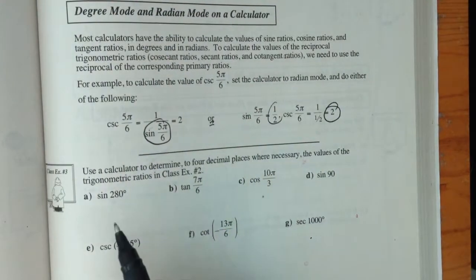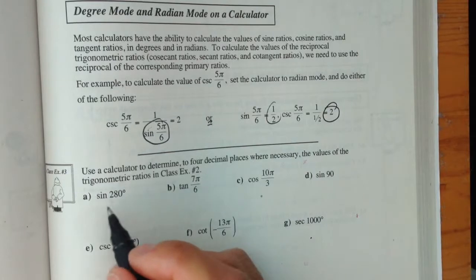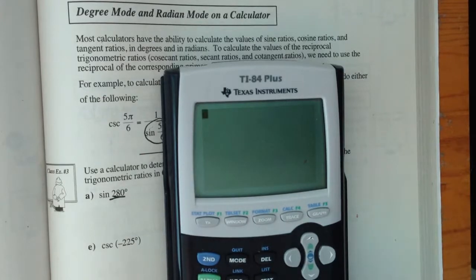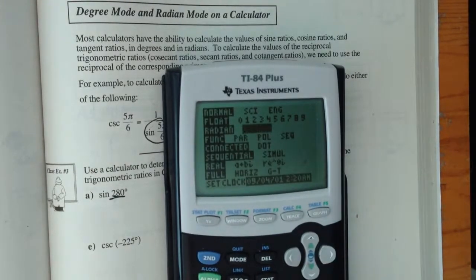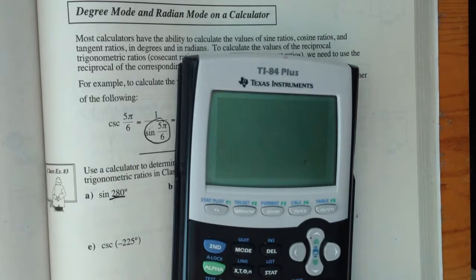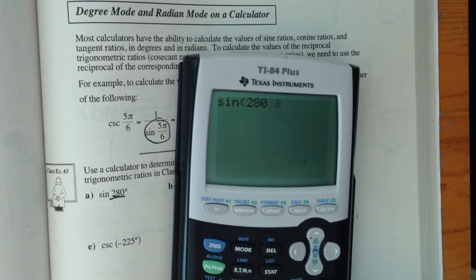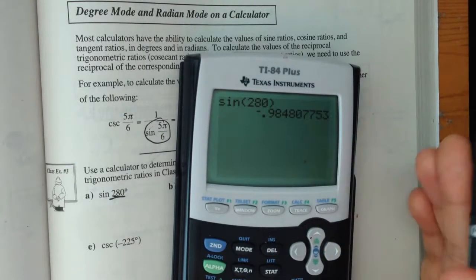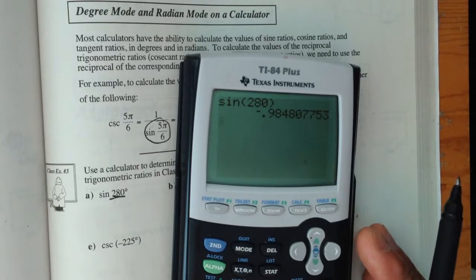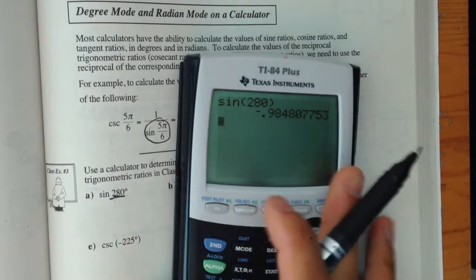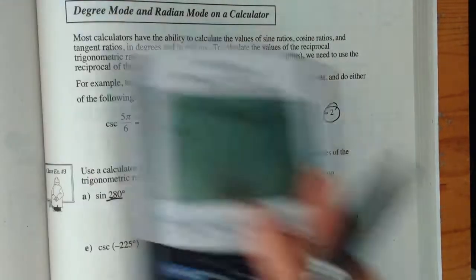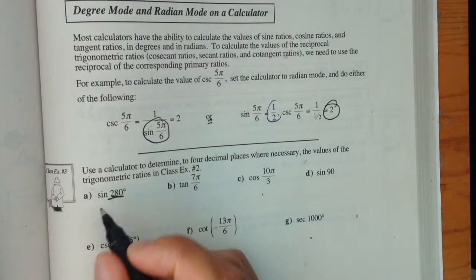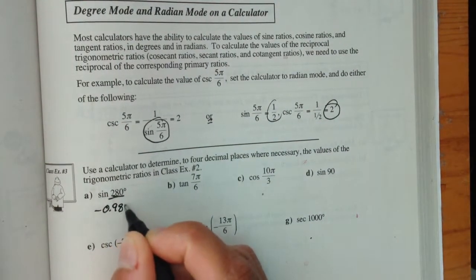So let's look at a few examples here. First of all, I have sine 280 degrees, so if I'm in degrees, then I need to use the degrees mode in the calculator. I've got to switch back from radians to degrees, clear, sine 280. I get an answer of negative 0.9848. And that's a sine, right? So I'm not looking for a secant or anything like that, so to four decimal places, that's my answer, negative 0.9848.